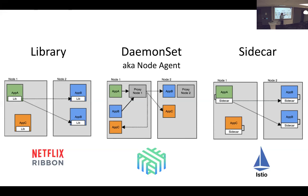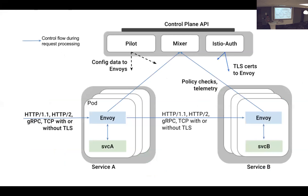The sidecar can apply policy, do retry logic, and take care of mutual TLS between services so that you don't have to trust a perimeter and don't have to worry about things on the wire. That's the sidecar model that Istio uses.